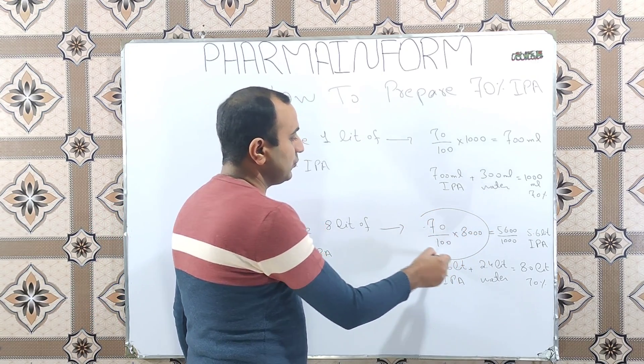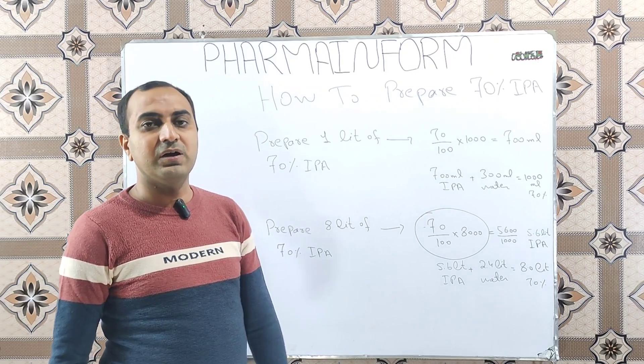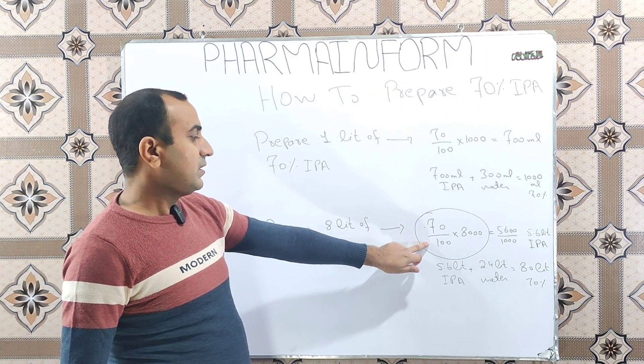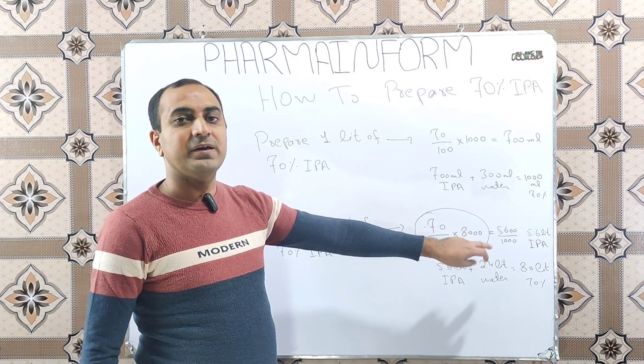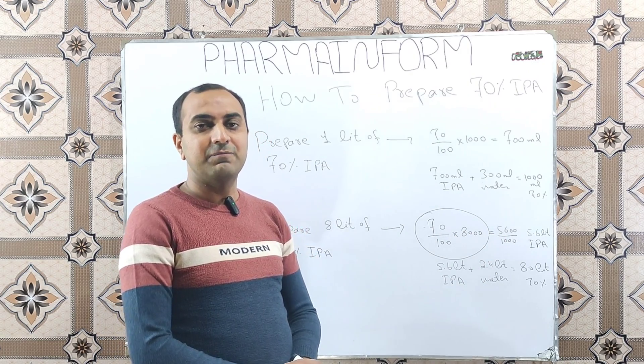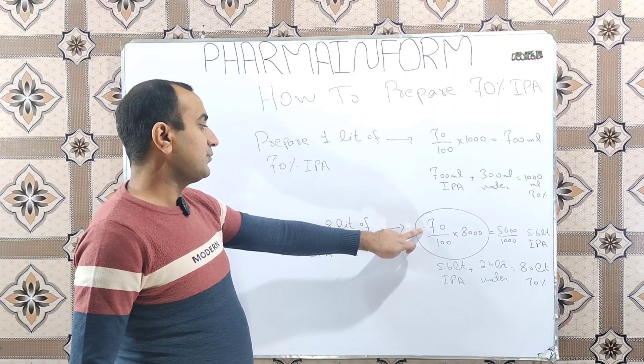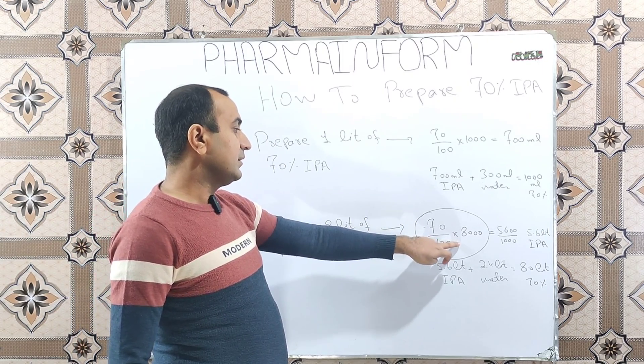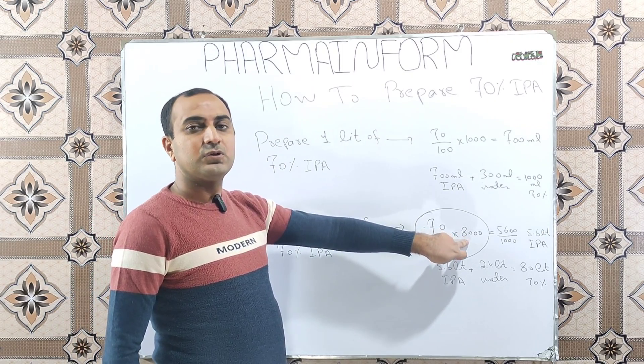Simply you have to remember this formula: 70 over 100 multiply by any volume you want to prepare in ml. Here is 8 liters, so 70 over 100 into 8 into 1000, which equals 8000 ml.